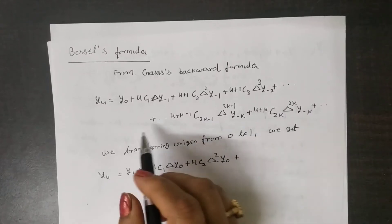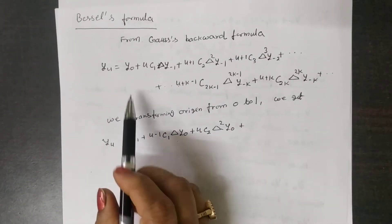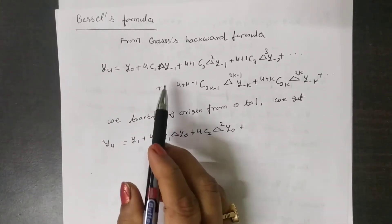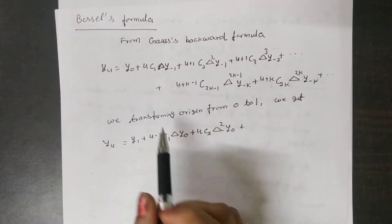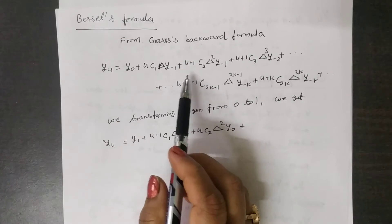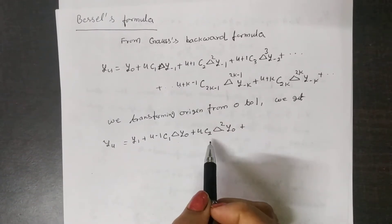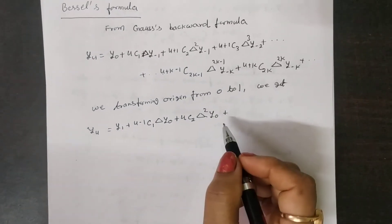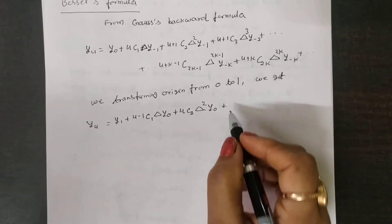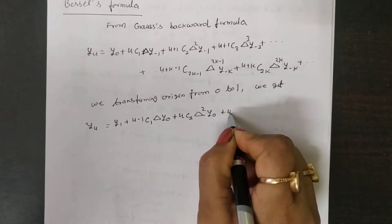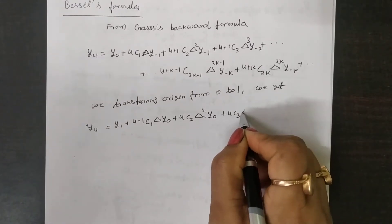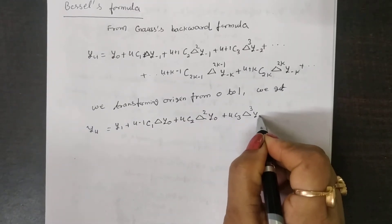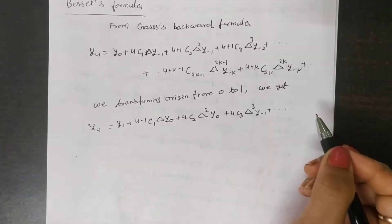In this formula, after the origin shift, we get y1. y0 becomes y1; (u)·C1 becomes (u-1)·C1 and delta·y(-1) becomes y0; plus (u)·C2·delta²·y(-1) which becomes y0. The next term can be written as u·C3·delta³·y(-2), which becomes y(-1), and so on.